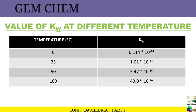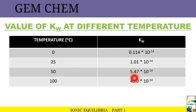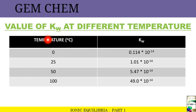Now we will see the values of Kw at different temperatures. At 0°C it is 0.114 × 10⁻¹⁴; at 25°C it is 1.01 × 10⁻¹⁴; at 50°C it is 5.47 × 10⁻¹⁴; and at 100°C it is 49.0 × 10⁻¹⁴. So the value of Kw changes with temperature.